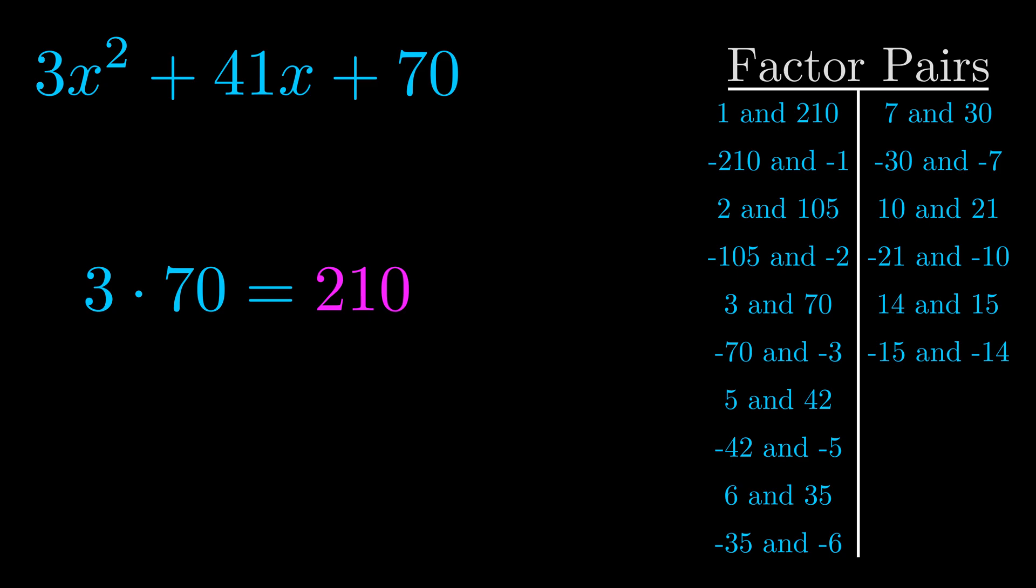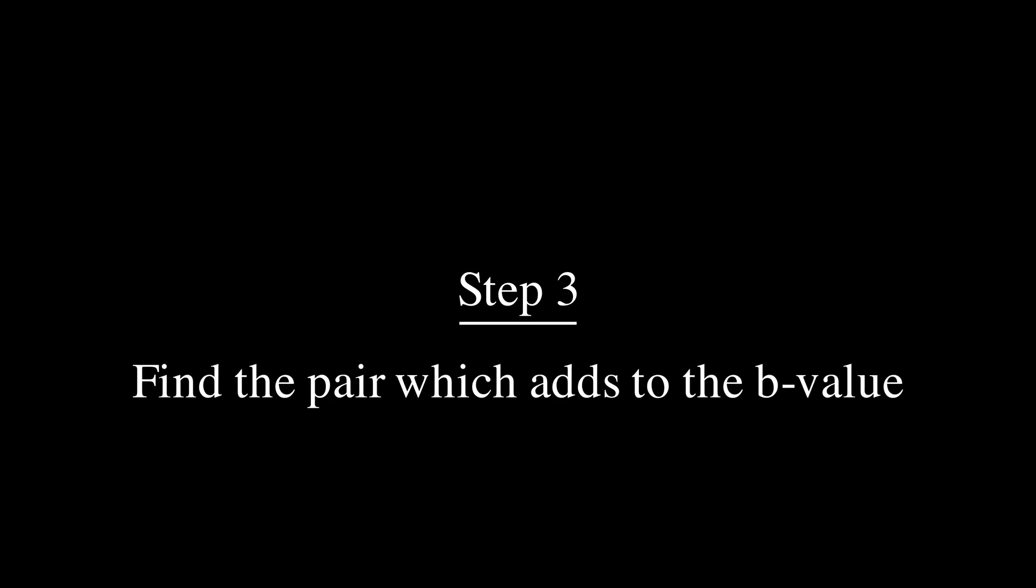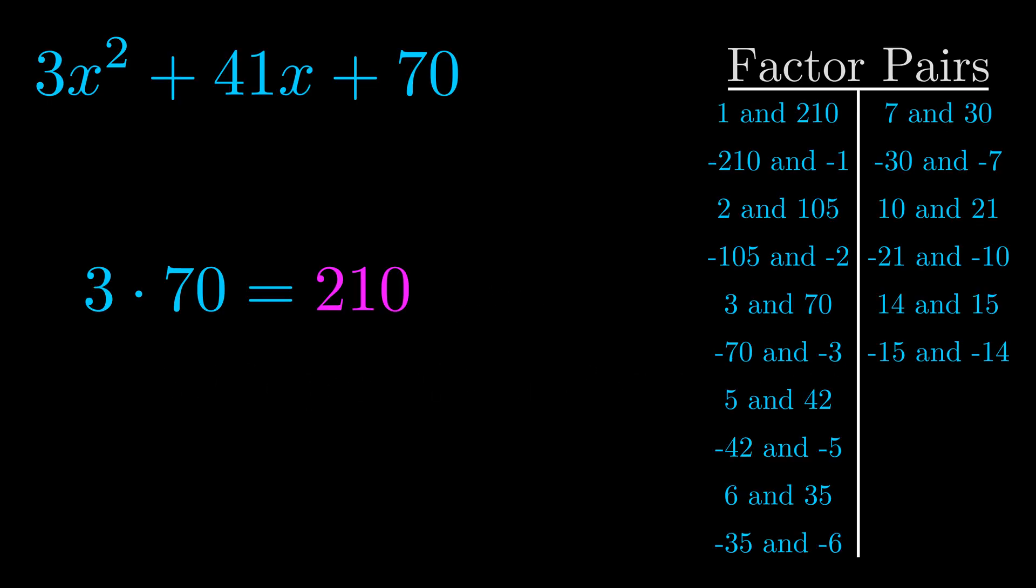Now once you have these factor pairs the goal is to find which of these pairs adds to the b value. The b value is the coefficient on the x term. That's the middle term, the one that we haven't done anything with yet. And really this is the only factor pair that we need.